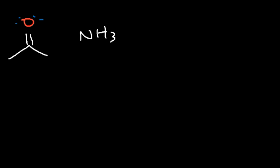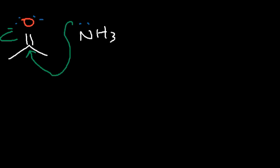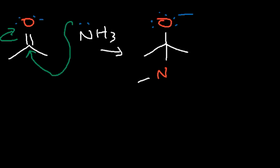Let's go over the mechanism, starting with acetone. We add ammonia under mildly acidic conditions, around pH 4 to 5, so we also have the ammonium ion in solution. Ammonia attacks the carbonyl carbon, causing the pi bond to break, and the oxygen ends up with a negative charge. We now have a nitrogen attached to the carbon with three hydrogen atoms.